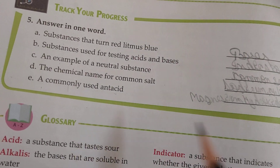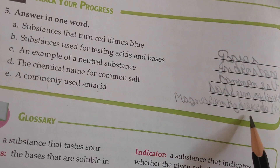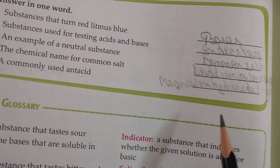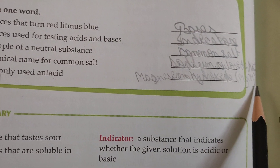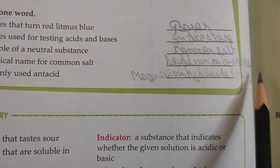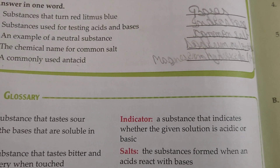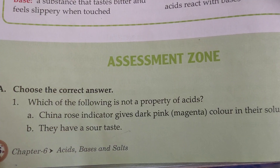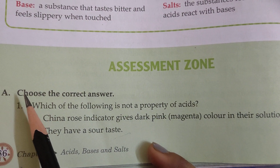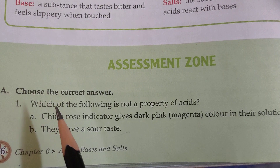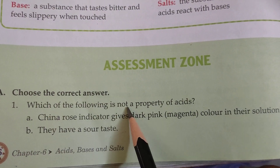A commonly used antacid is magnesium hydroxide, Mg(OH)₂. Now the MCQ section: which of the following is not a property of acid will be number D — they are not corrosive in nature.